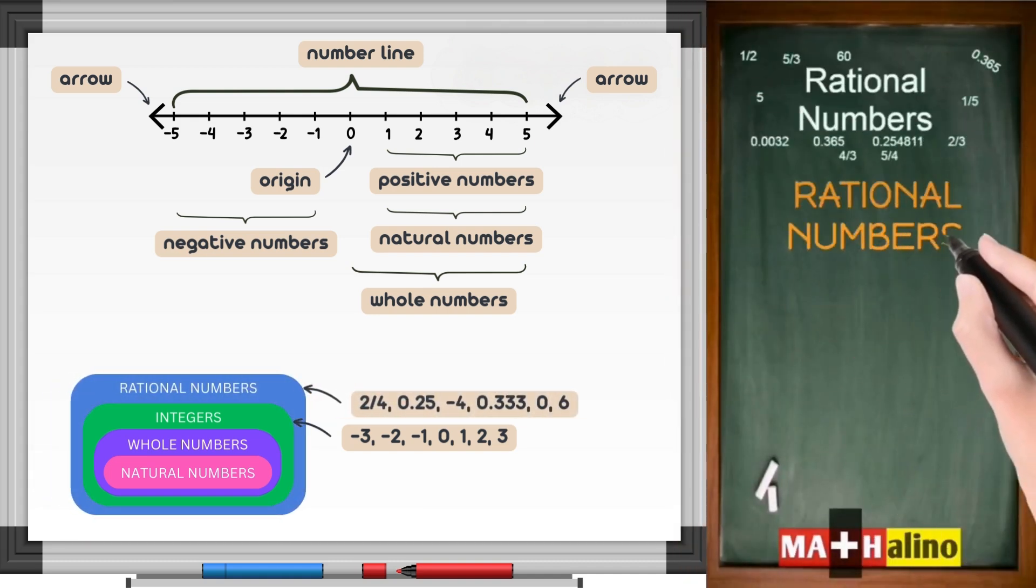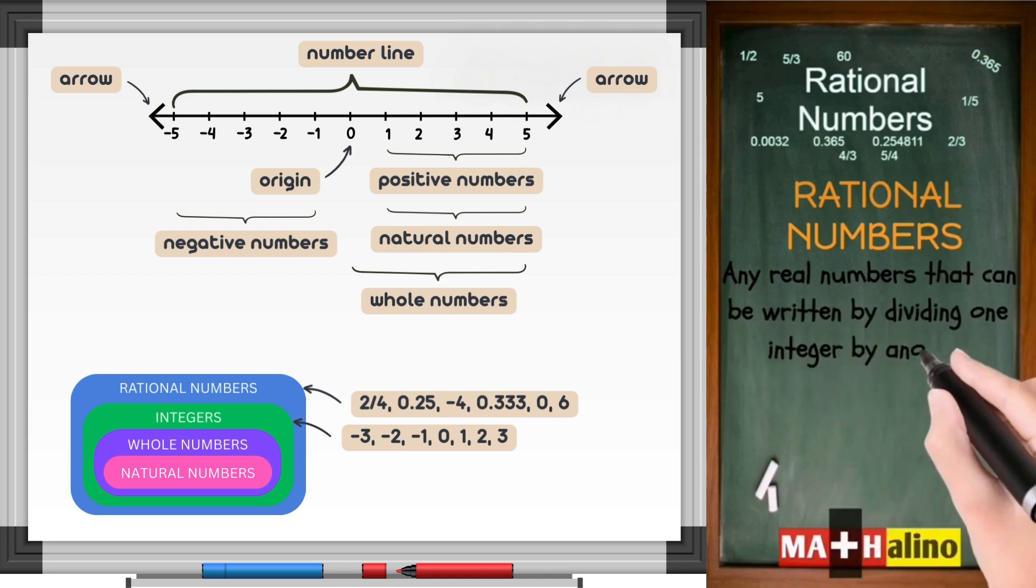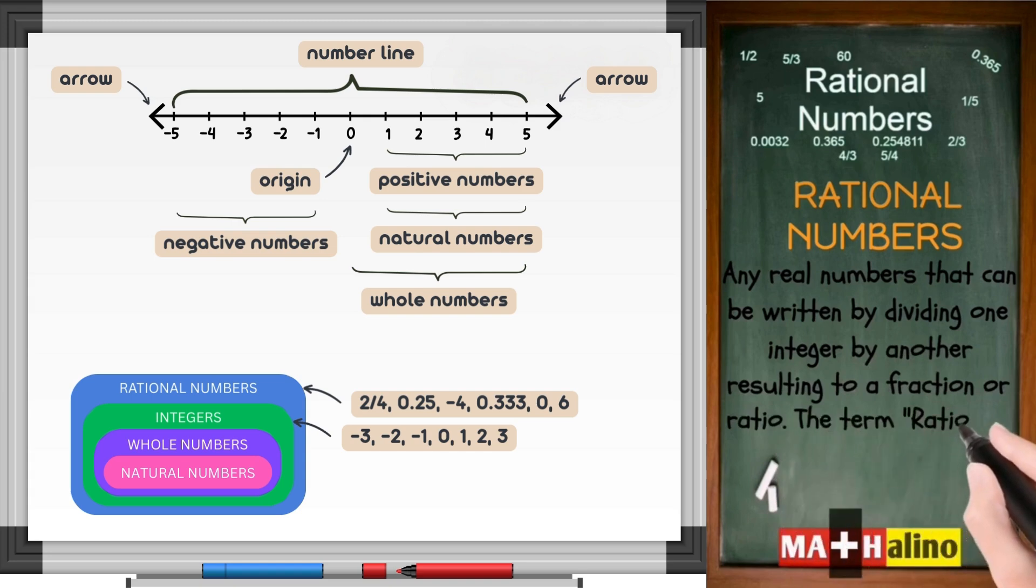Rational numbers. Any real numbers that can be written by dividing one integer by another resulting to a fraction or ratio. The term rational comes from the root word ratio.